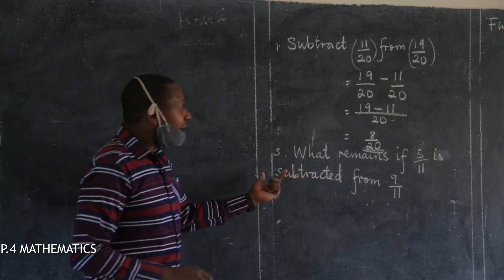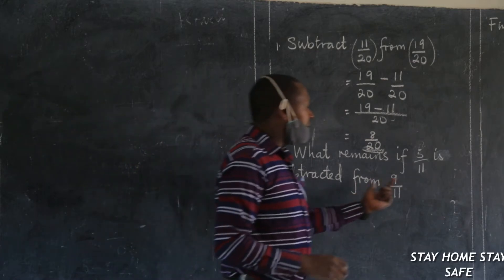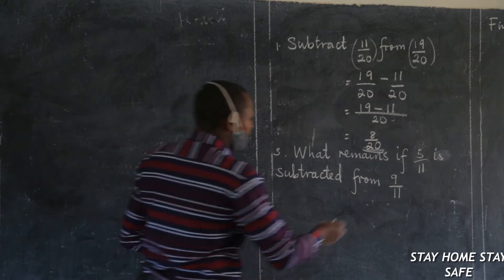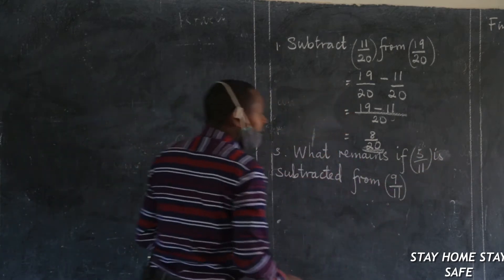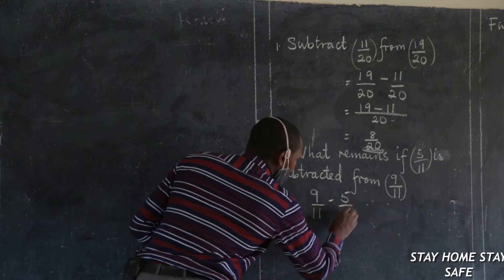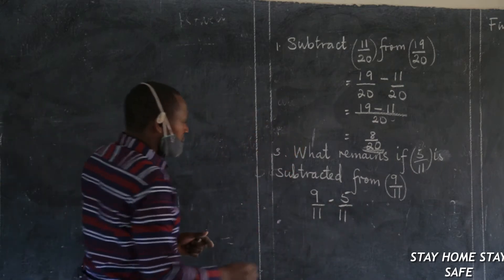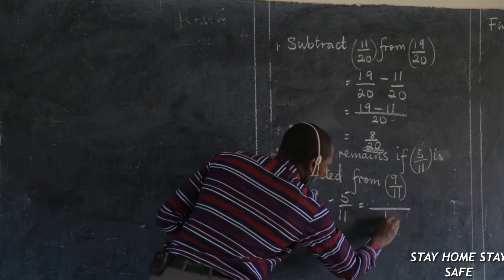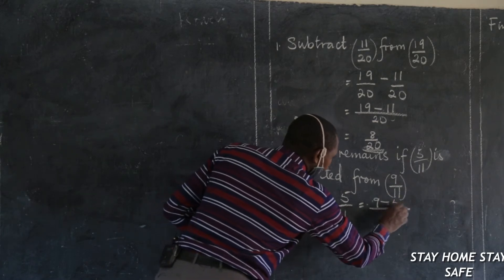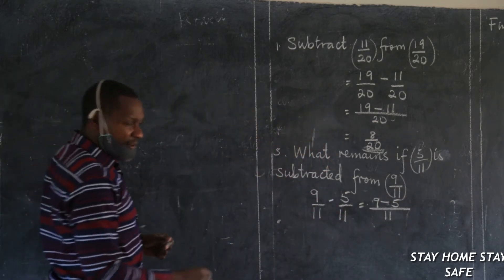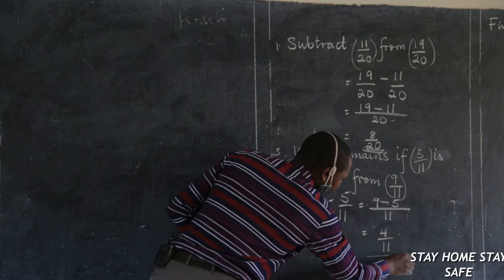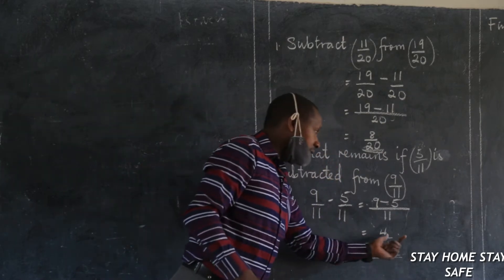Look at the third one. What remains if 5 elevenths is subtracted from 9 elevenths? Same thing. 5 elevenths is subtracted from 9 elevenths. We said keep the common denominator, which is none other than 11. Then subtract the numerators: 9 minus 5. What do you get? Somebody saying 4. And this is out of 11, and you call this 4 elevenths.